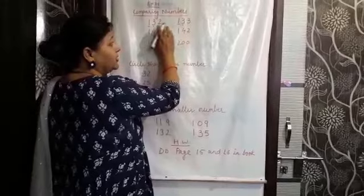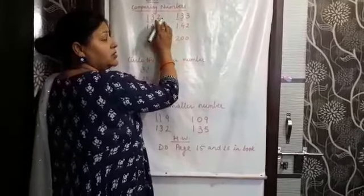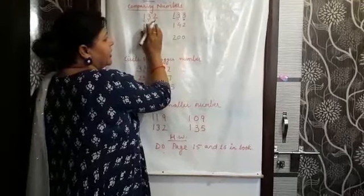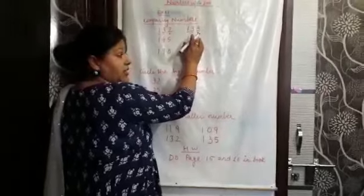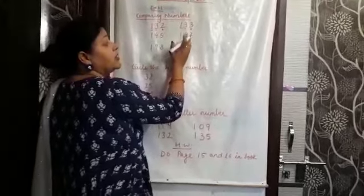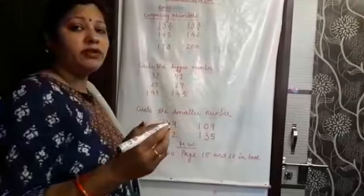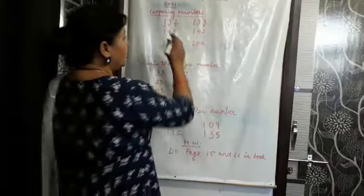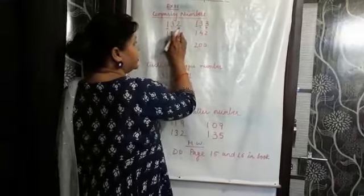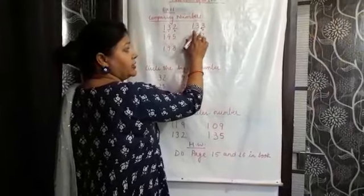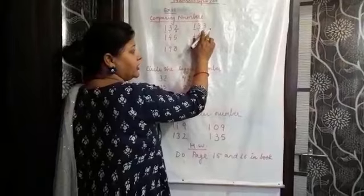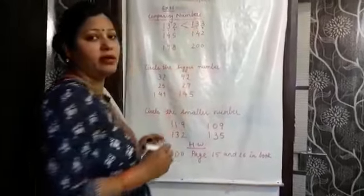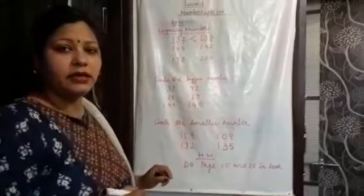So we will compare the numbers at the ones place. Here it is 2 and here it is 3. Between 2 and 3, which number is smaller? 2 is smaller. So 132 is smaller than 133, and 133 is bigger than 132.